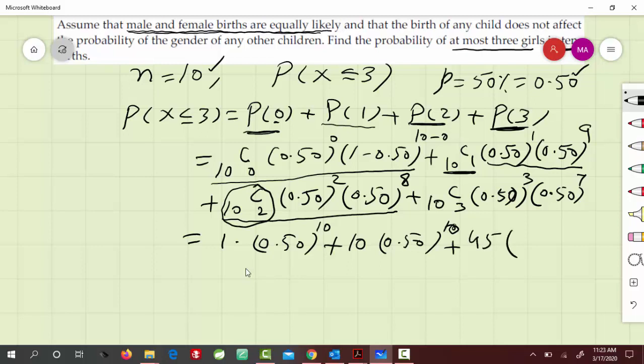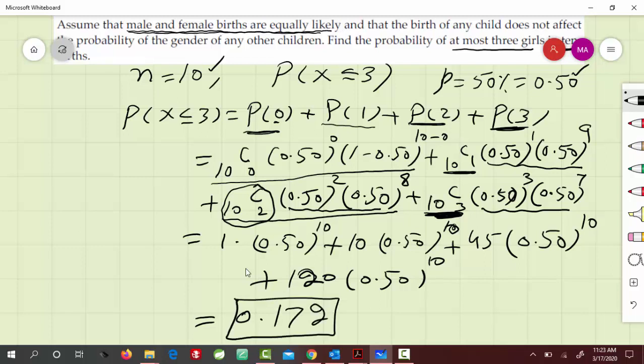And then from this, this gives us 120, and then 0.50 to the 10. The exponential adds to the 10, and this whole thing will simplify into 0.17, and that's the final answer.